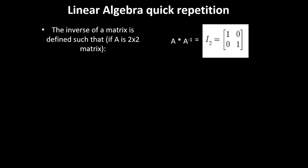To decrypt we need to know some linear algebra. The inverse of a matrix is defined such that if we take A times the inverse of A, we get the identity matrix, which is a matrix that has ones on the diagonal. If A is 2 by 2, we get just two ones, a 2 by 2 identity matrix.